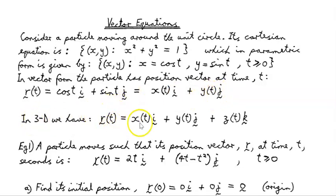So, in 3D we would have r(t) as x as a function of t in the i direction, plus y as a function of t in the j direction, plus z as a function of t in the k direction. i, j, k in three dimensions.